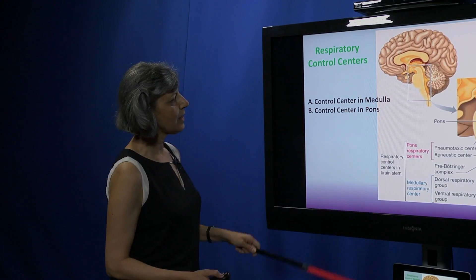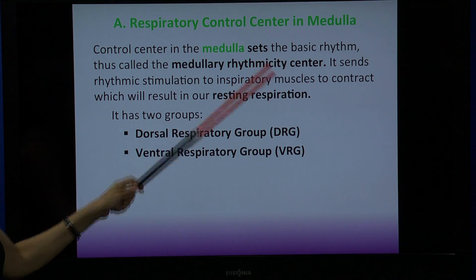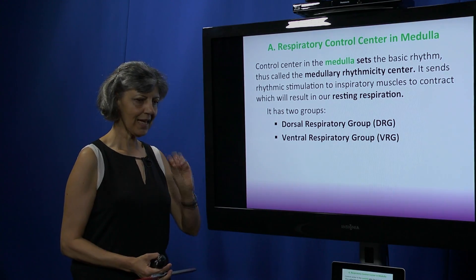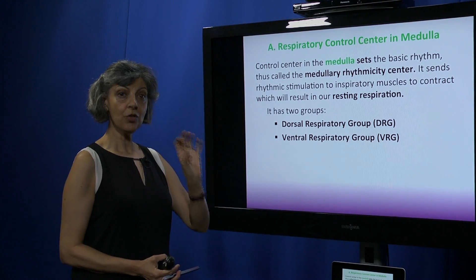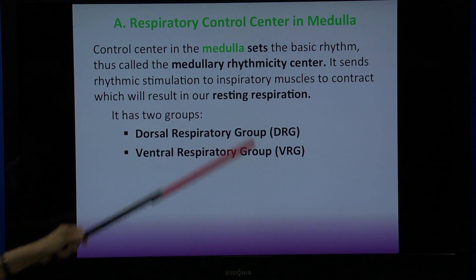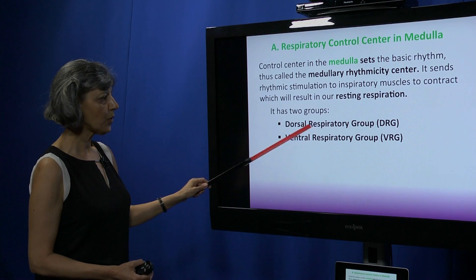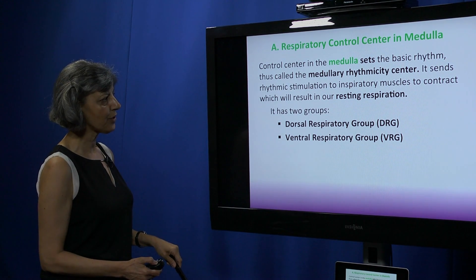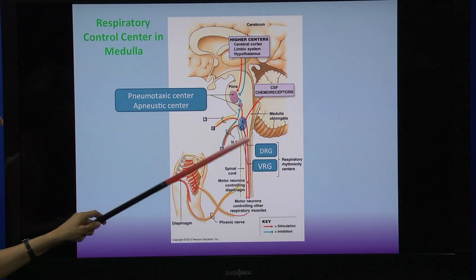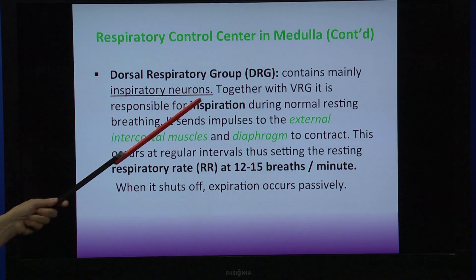We're going to start with the medullary control center. This is the area that sets the basic rhythm, so we call it the rhythmicity center. It sends regular rhythmic impulses to the breathing muscles to set the rate of breathing — this is of course resting respiration. There are two groups in the medulla: the dorsal respiratory group and the ventral respiratory group.